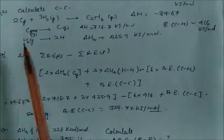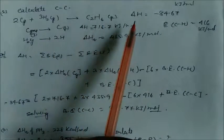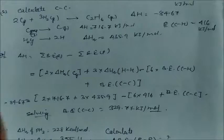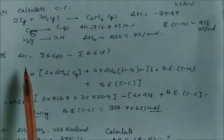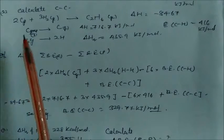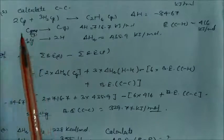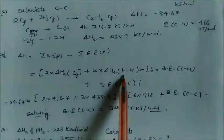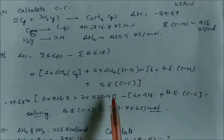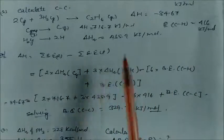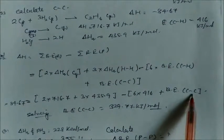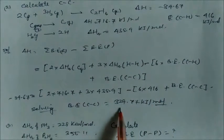To calculate C–C bond energy: given 2C(s) + 3H₂(g) → C₂H₆, with ΔH of formation, heat of atomization of carbon and hydrogen, and C–H bond enthalpy. ΔH = 2 × heat of atomization of C + 3 × heat of atomization of H₂ minus (6 × C–H bond + 1 × C–C bond). Substituting known values and solving gives C–C bond energy = 329.77 kJ/mol.